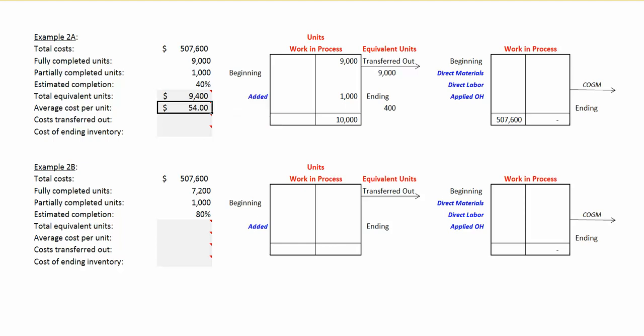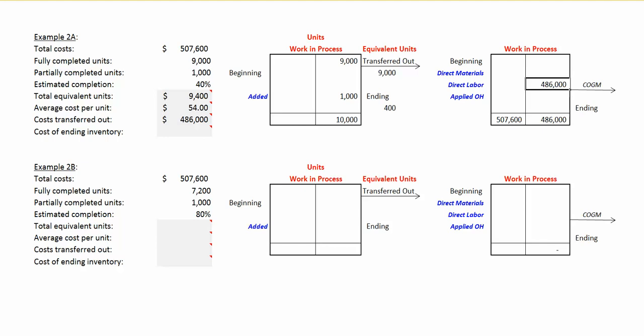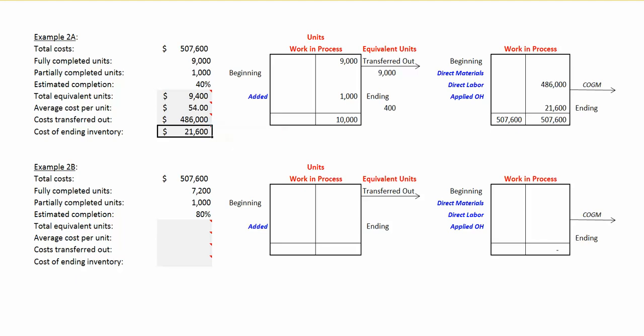In terms of the costs that are transferred out, since we've transferred out 9,000 equivalent units at a cost of $54 per unit, $486,000 will be leaving work in process and going to cost of goods manufactured. The cost remaining in ending work in process inventory will be the 400 equivalent units times $54 per unit, or $21,600. The cost accounted for — transferred out plus ending work in process — equals the $507,600 in cost that we had to account for.